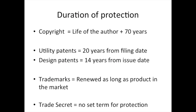Each of those types of intellectual property has a different duration of protection. After this expires, anyone can use it — it becomes part of what's called the public domain. Copyright has been extended many times and right now it's the life of the author plus 70 years. Utility patents used to be 14 years but were changed to 20. Design patents are still 14 years. Trademarks can be renewed indefinitely as long as the product or service is still being sold, and trade secrets have no set term of protection — they last as long as the secret can be kept.